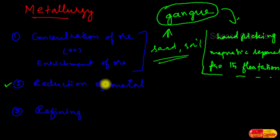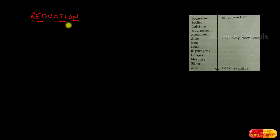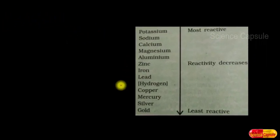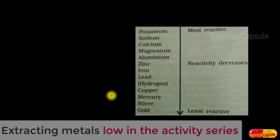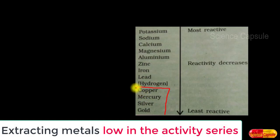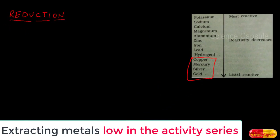Moving on to the next step — reduction of metal — this is very important. Reduction is one of the most important steps in the metallurgical process. For elements which lie low in the activity series, they are mostly available in free state, so reduction is not necessary. However, copper and mercury can exist as sulphide ores, and if so, they need to be reduced. A simple step is involved: heating alone is sufficient to reduce these metal ores.